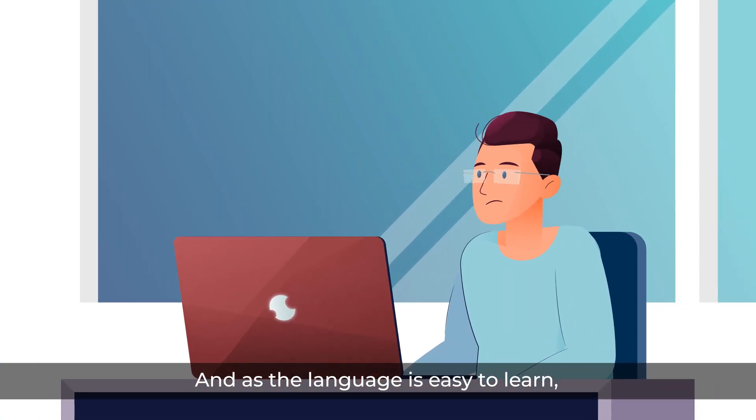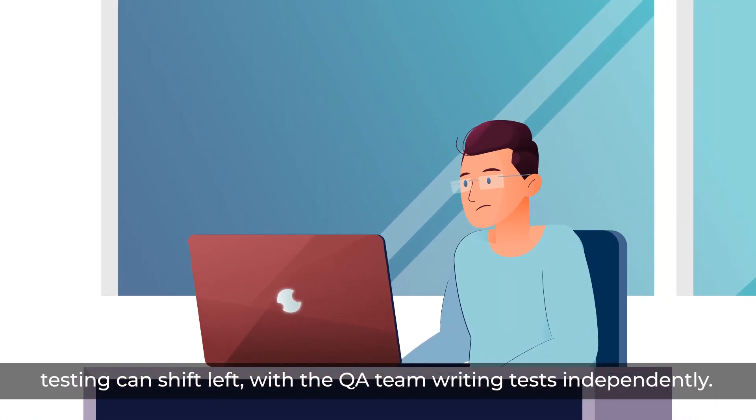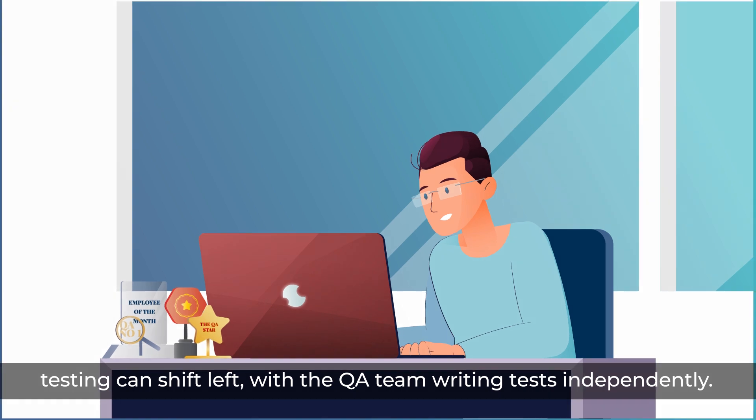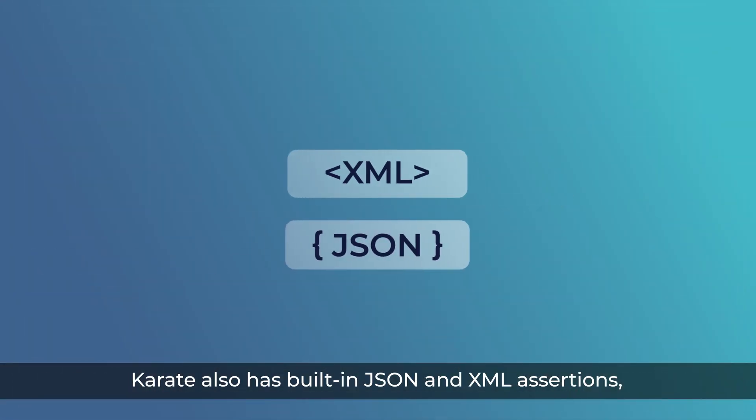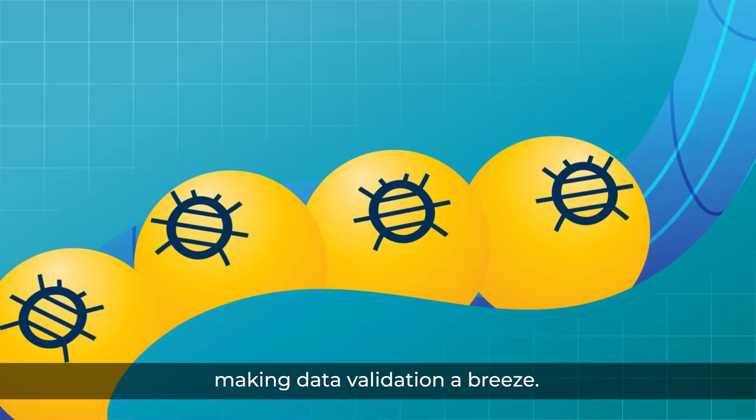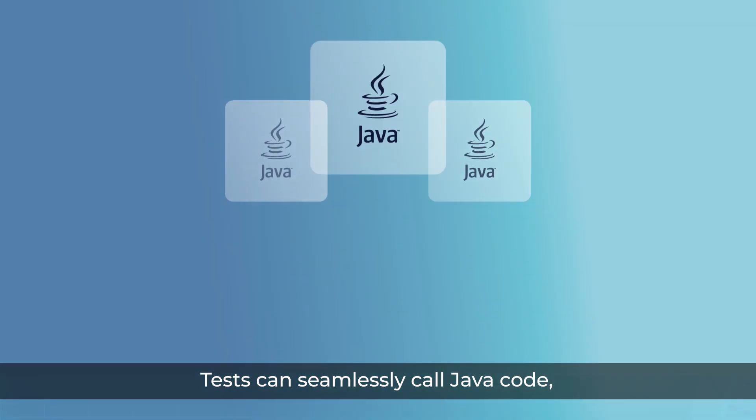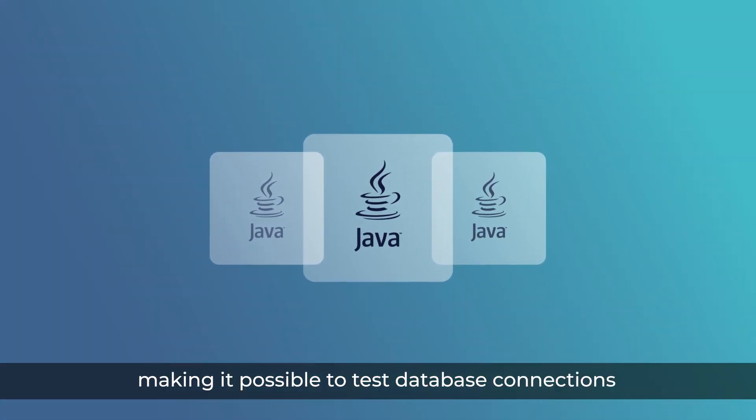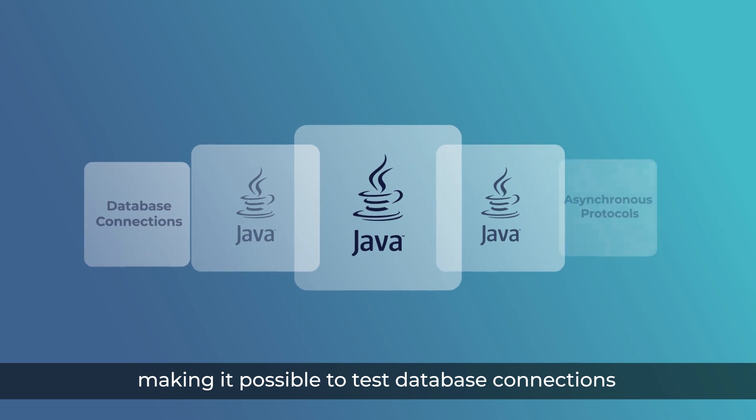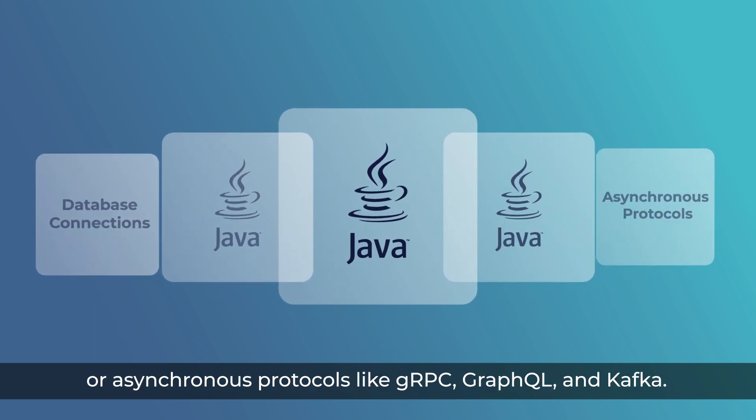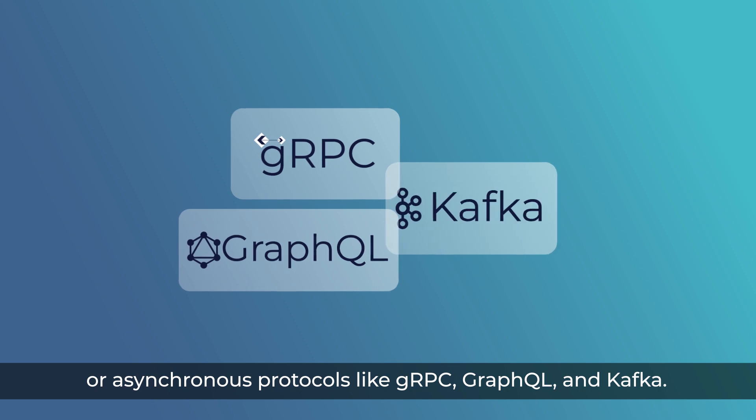And as the language is easy to learn, testing can shift left with the QA team writing tests independently. Karate also has built-in JSON and XML assertions, making data validation a breeze. Tests can seamlessly call Java code, making it possible to test database connections or asynchronous protocols like GRPC, GraphQL and Kafka.